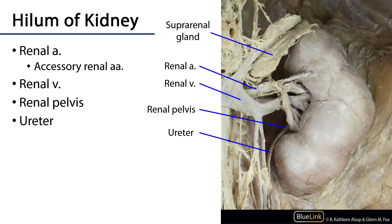The hilum of the kidney is where everything enters or exits. Renal arteries enter at the hilum along with the renal plexus associated with the renal artery. That renal artery divides into segmental arteries which enter at the hilum, and from time to time we may also see an accessory renal artery entering there. Renal veins also enter at the hilum, and the renal pelvis — which is contiguous with the ureter — is at the hilum as well.